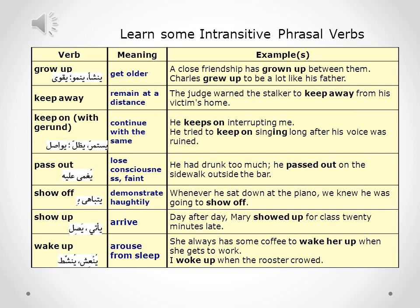In this last slide we will learn some more basic common intransitive phrasal verbs. The first one is 'grow up,' which means get older. Examples: a close friendship has grown up between them. Charles grew up to be a lot like his father.